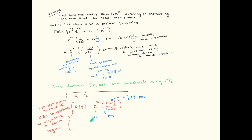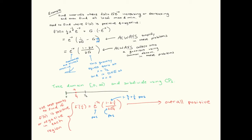We plug x equals one-fourth into the first derivative. E to any power is always a positive number — I don't even need a calculator for that. The square root of one-fourth is positive. In the numerator, we get one minus two times one-fourth, which gives us positive one-half. So we have positive times positive divided by positive, which is overall positive. We can mark that the first derivative is positive from zero to one-half.